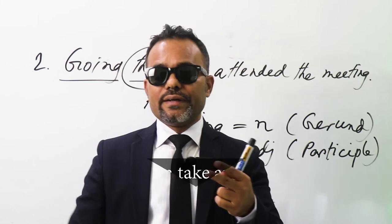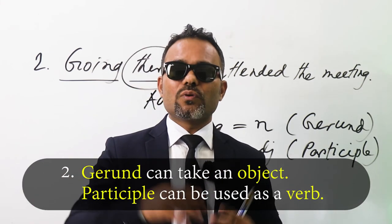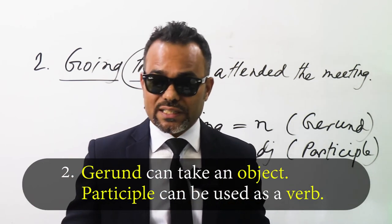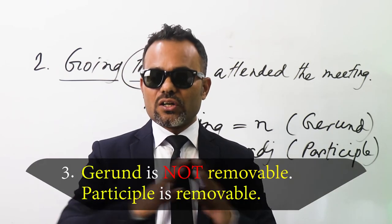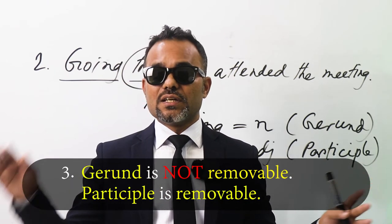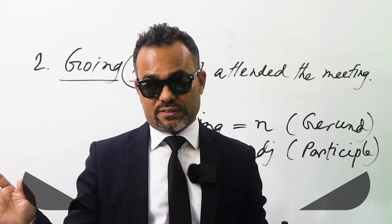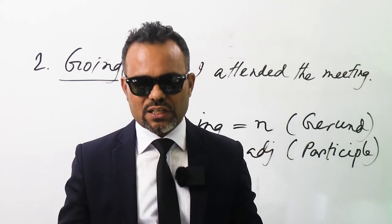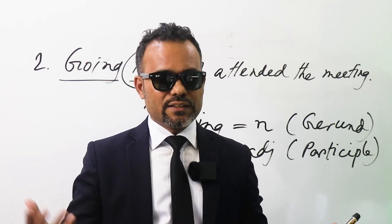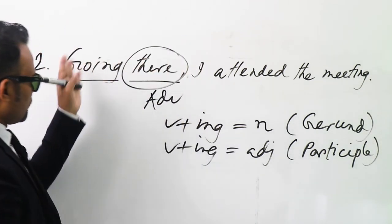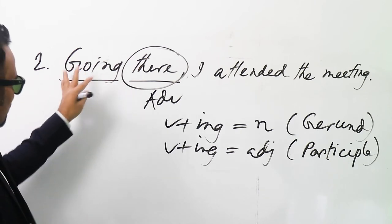Then number two: gerund can take an object. Participle can be used directly as a verb. Gerund is not removable from the sentence. But participle is removable from the sentence, most of the time. So that way you can identify whether it is a gerund or participle.